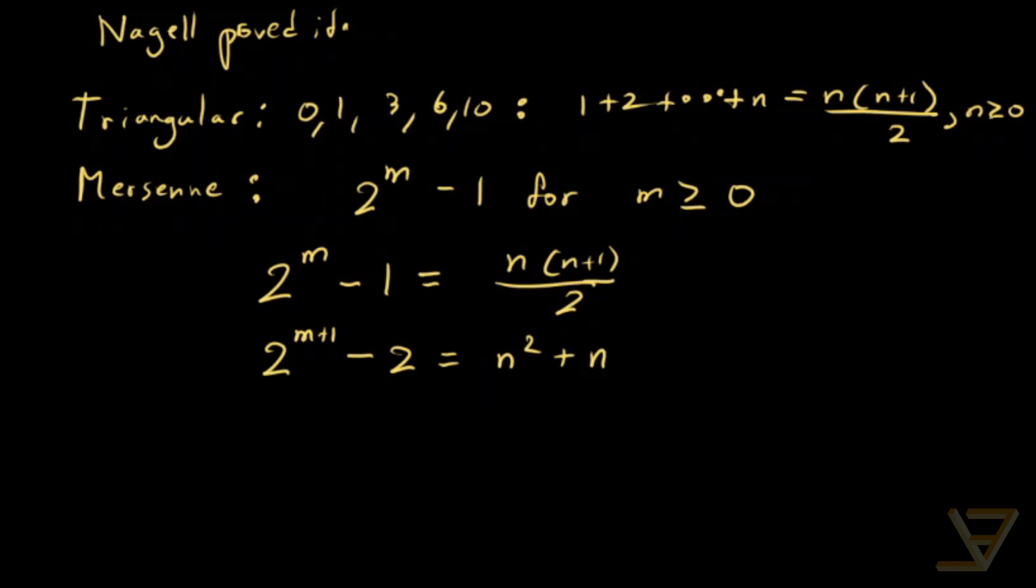Then we multiply both sides by 4 because we want to complete the square over here. And we get 2 to the m plus 3 minus 8 is equal to 4n squared plus 4n.